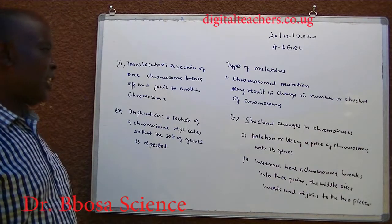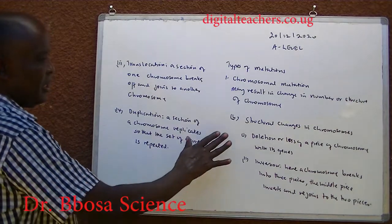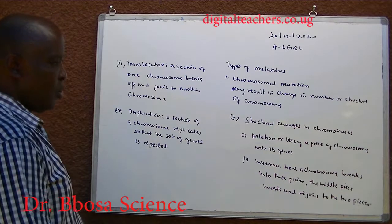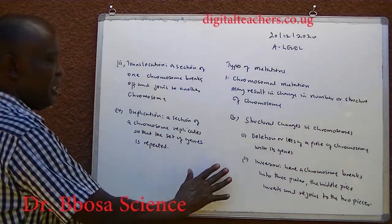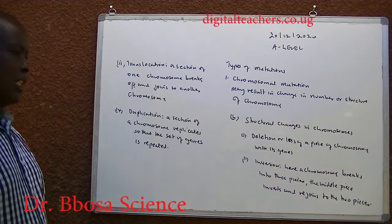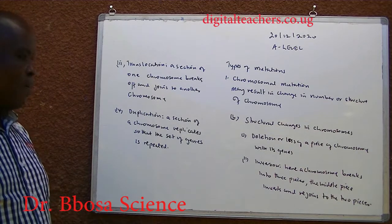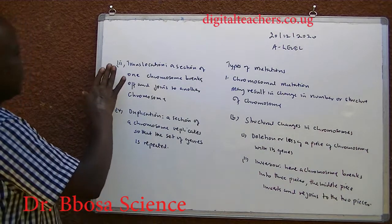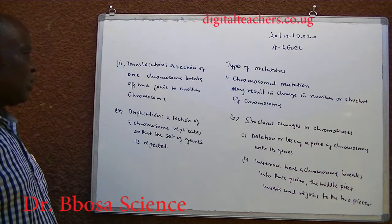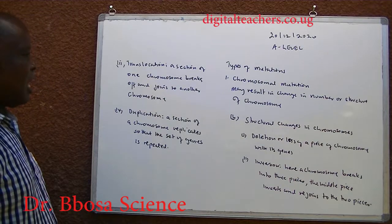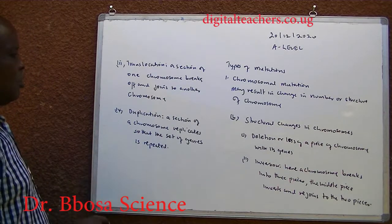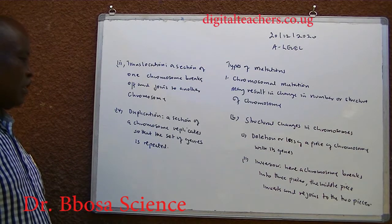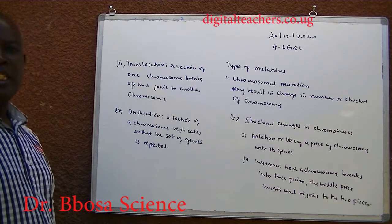B, structural changes in chromosomes: one, deletion — loss of a piece of chromosome with its genes. Two, inversion — a chromosome breaks into three pieces; the middle part inverts and rejoins the two end pieces. Three, translocation — a section of one chromosome breaks off and joins to another chromosome. Four, duplication — a set of genes replicates so that the set of genes is repeated.